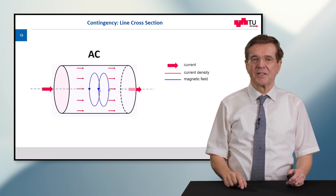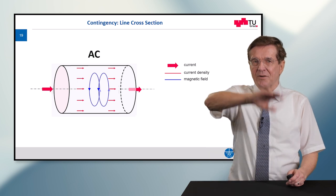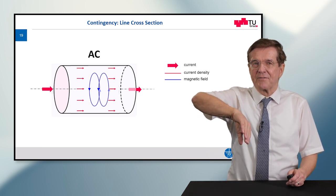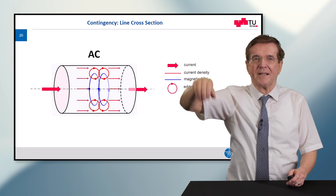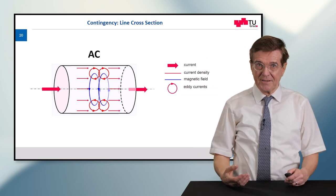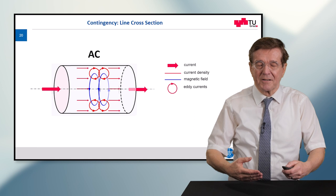Now when we change from DC to AC the current is going up and down. If the current goes up, the current density goes up, the magnetic field becomes stronger.